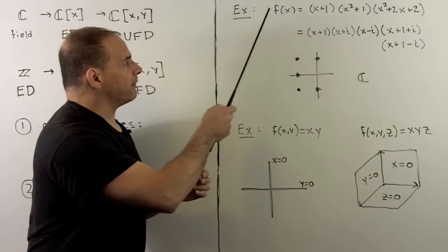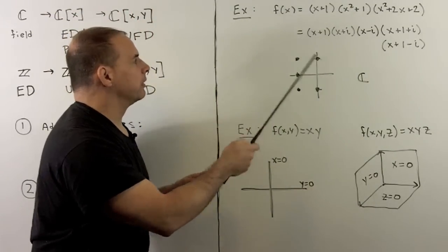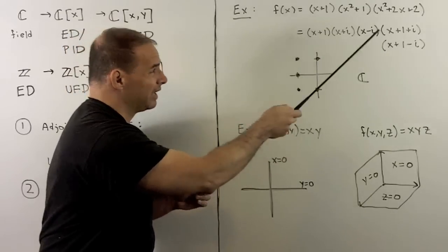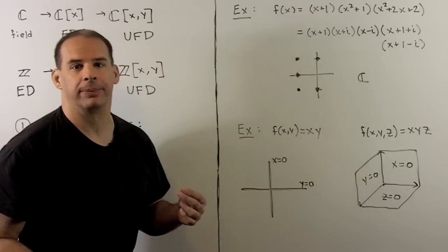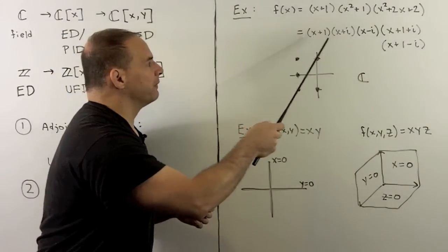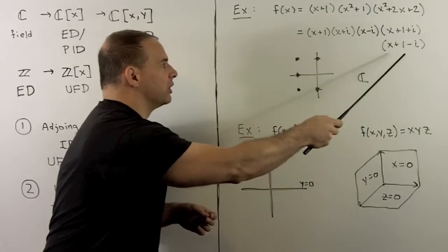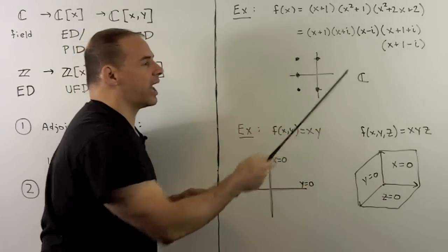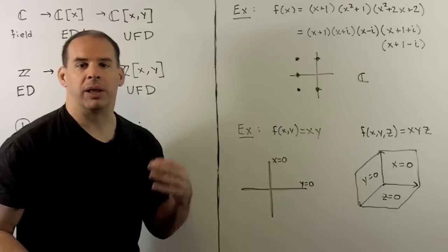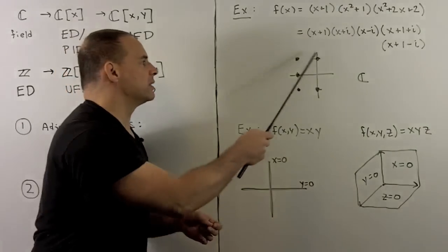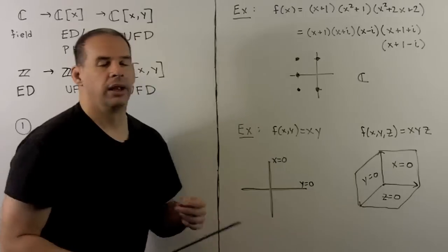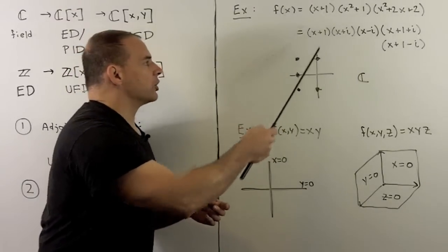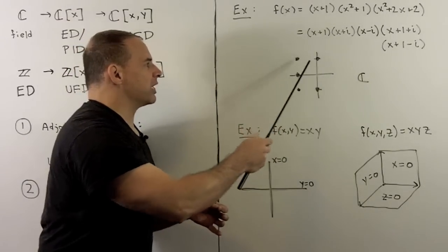Consider the polynomial f(x) over the complex numbers. We have a bunch of factors: (x+1), (x+i), (x−i), (x+1+i), and (x+1−i). If I take each irreducible factor, set it equal to zero, I get −1, −i, +i, and so on. We can plot all those points in the complex plane. The point here is that the irreducible factors correspond to irreducible objects in the plane — specifically, a point, which I'm not going to be able to pull into two separate objects.